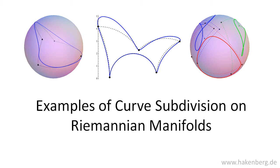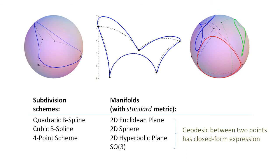The video shows examples of curved subdivision on manifolds with a metric. We restrict the discussion to Riemannian manifolds with geodesics of closed form expression. On these manifolds, subdivision is a fairly efficient and accurate process.